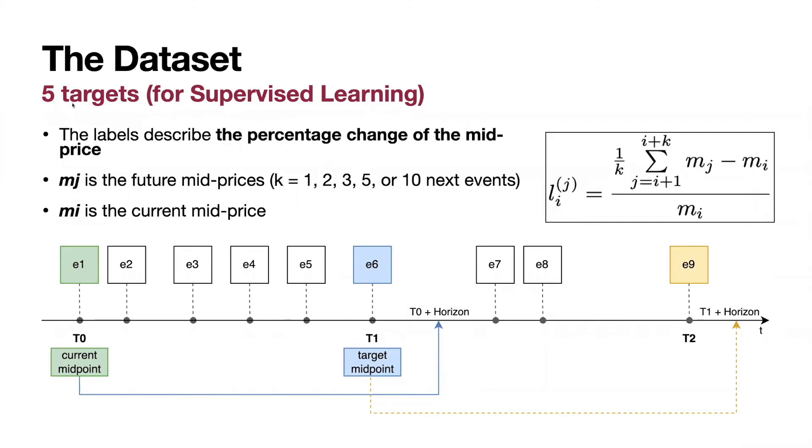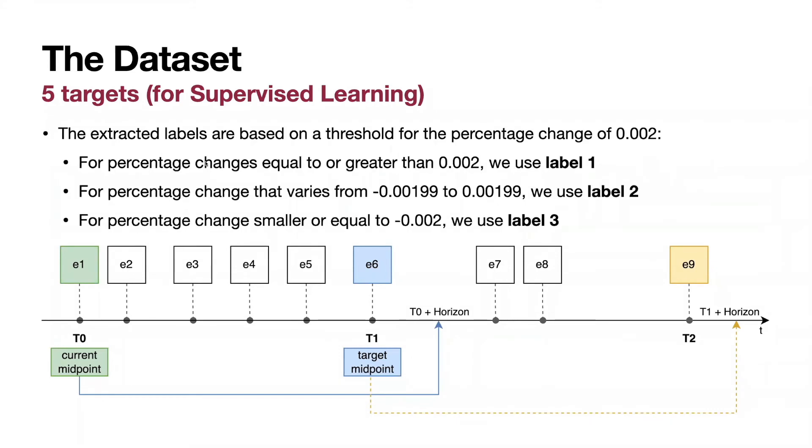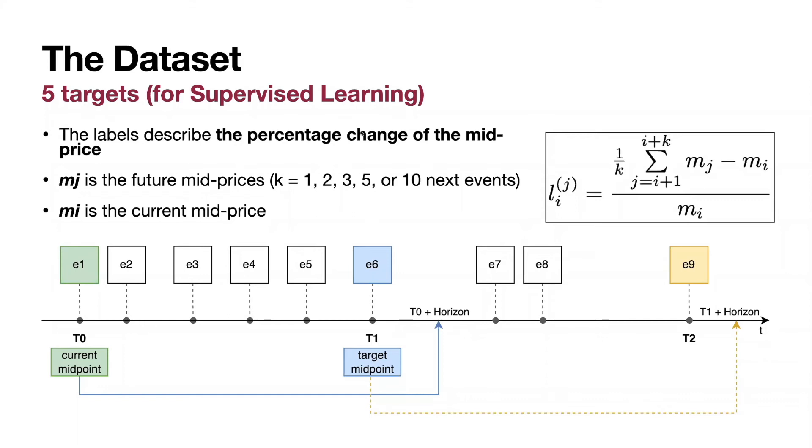The labels which you can find in the dataset represent the percentage of change of the mid-price. How much the mid-price changed comparing to a previous state of the LOB. The MJ is the future mid-prices at the next 1, 2, 3, 5, or 10 next events. MI is the current mid-price. Then the extracted labels, particularly the percentage of change of the mid-price, it's a continuous value.